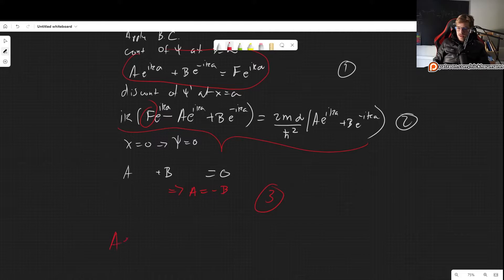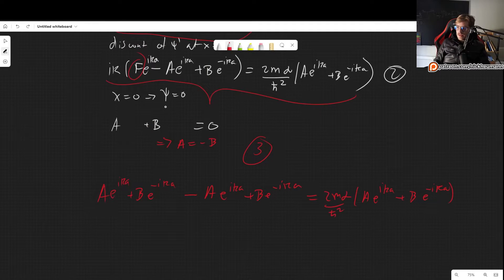So basically, this tells us that A has to be equal to minus B. So these are our three conditions. So now we can just plug everything into equation 2. So let's divide by i k. And let's plug in for F what we have up here. So equation 1. So we get instead of F, we can plug in for F, A e to the i k a plus B e to the minus i k a minus A e to the i k a plus B e to the minus i k a,